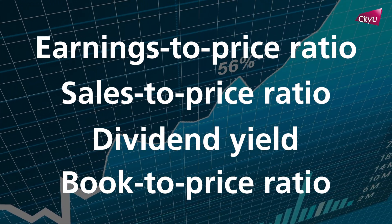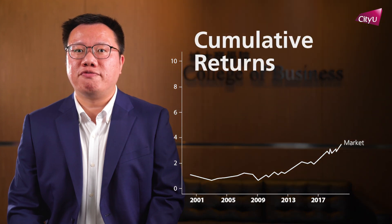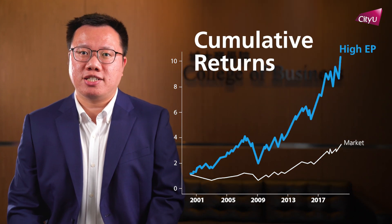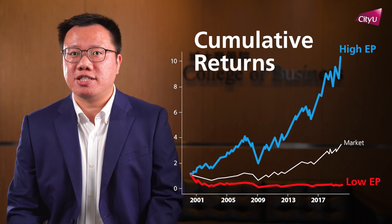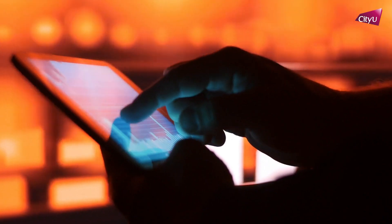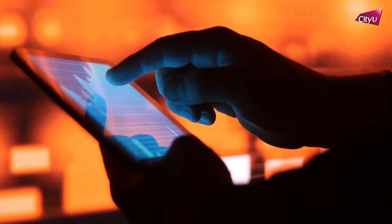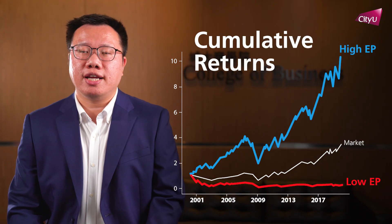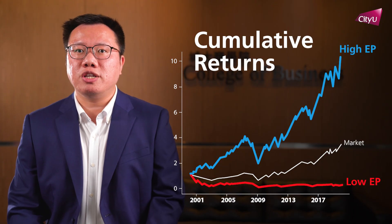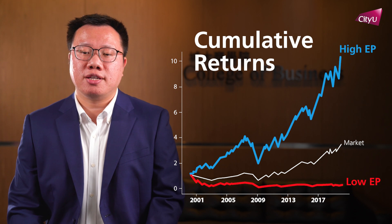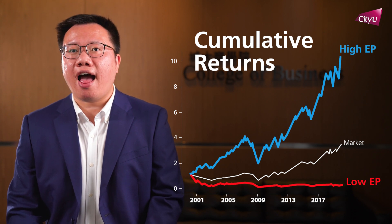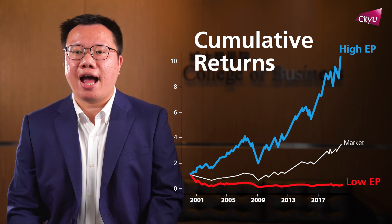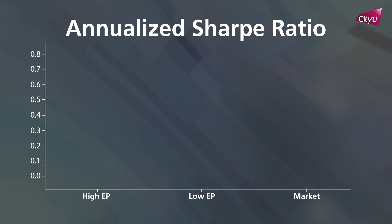In the graph here, I have constructed two portfolios for you — one is the high EP stocks and one is the low EP stocks. Over the past three decades, we found that the high EP stocks outperformed significantly over the low EP stocks on cumulative returns. We also see that the high EP stocks produce an extremely high risk-adjusted Sharpe ratio.